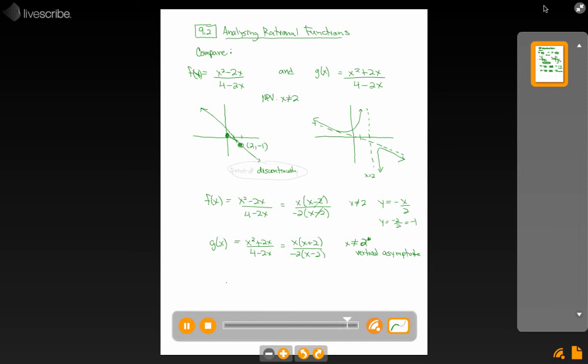So again, the difference between the indeterminate form of having a 0 over 0 situation, which results in this point of discontinuity, or having some number divided by 0. In this case, 8 divided by 0, which gives me undefined, but gives me this vertical asymptote.